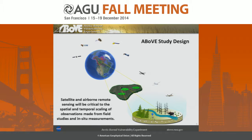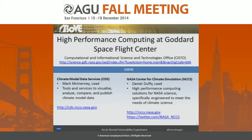This image highlights that from spacecraft to aircraft to ground data, there are a lot of observations that can be used for this region. I'm from Goddard Space Flight Center, specifically from the high-performance computing area — the Computational Information Science and Technologies Office.